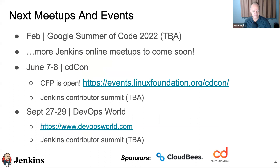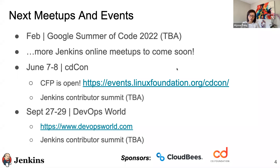Before we dive into the presentation, I'd like to highlight a couple of upcoming events for Jenkins. In February, we will be hosting Google Summer of Code 2022. If you'd like to be part of this program, we are looking for organizers, mentors, and project ideas — please reach out to us. I will leave a link in the comment window on the meetup page after this event. We're also always looking for presenters for our next online meetup, to bring helpful content to our community.